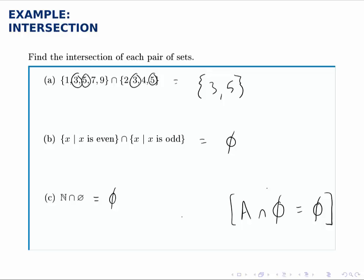And parts B and C are examples of what we call disjoint sets, meaning they have no overlapping elements. They're disjoint because their intersection is the empty set.